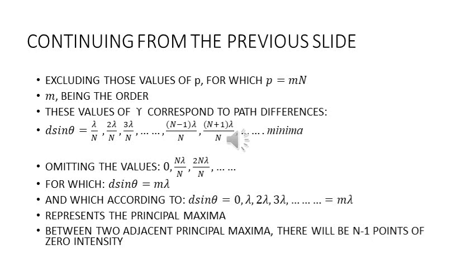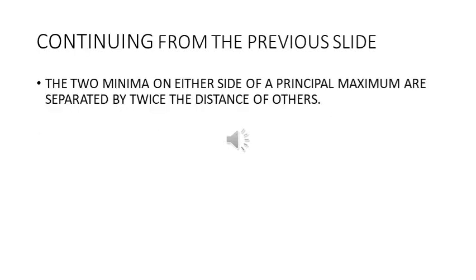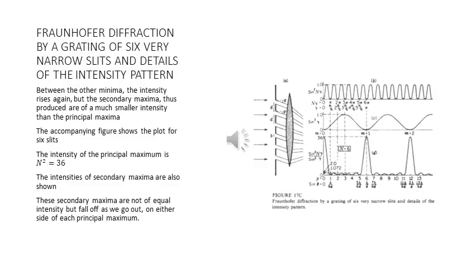For which d·sinθ equals mλ, and which according to the equation d·sinθ = 0, λ, ..., mλ represents the principal maxima. So between two adjacent principal maxima there will be N−1 points of zero intensity. Hence we can say that the two minima on either side of a principal maximum are separated by twice the distance of the others.